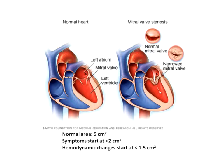Mitral stenosis leads to increased turbulence through the mitral valve, increased pressure of the left atrium, and back pressure changes which lead to the consequences of this disease. Normal mitral valve area is 5 centimeter square; symptoms begin when the valve falls below 2 centimeter square, and clinical and hemodynamic changes occur when it comes below 1.5 centimeter square.